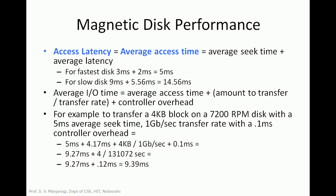Now let us look at magnetic disk performance. We can calculate average access time using the formula: average access time equals average seek time plus average latency. For the fastest disks, the average seek time is usually 3 ms and average latency is 2 ms, giving a total access latency of 5 ms. For slower disks, the average seek time is usually 9 ms and average latency is 5.56 ms, giving a total access latency of 14.56 ms.